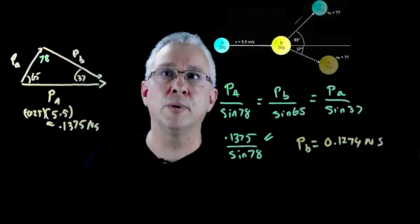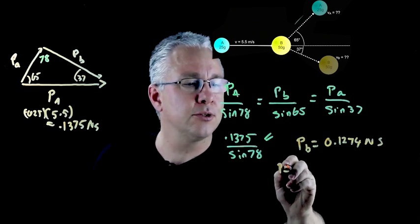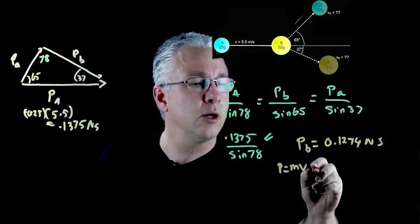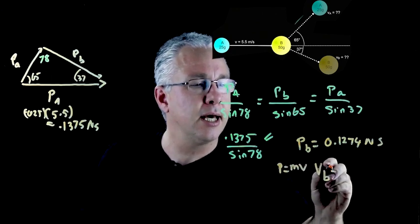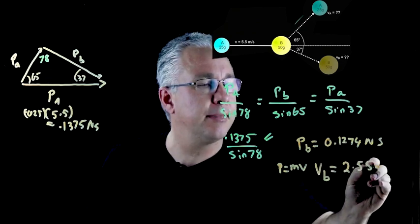What's the velocity? Well we already know the mass of B. So because momentum equals mass times velocity we can work out the velocity of B and that simply is going to be equal to 2.55 meters per second.